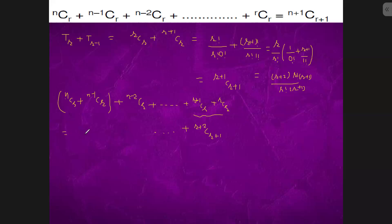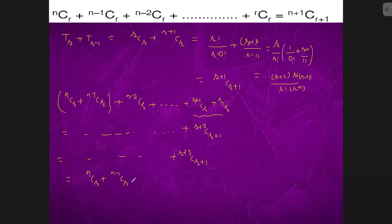Similarly there is some dot dot term. r plus one — this will again come out to be the previous one, it will come out to be r plus three, r plus one. So it will keep on doing; at the end we have nCr and there will be some term n minus one, n minus one C r. Then n minus one, n plus one, n plus one C r plus one. This is coming out to be r plus two factorial upon r plus one factorial upon one factorial.